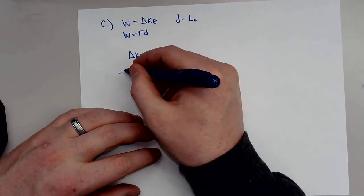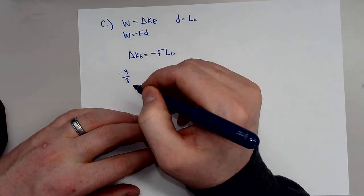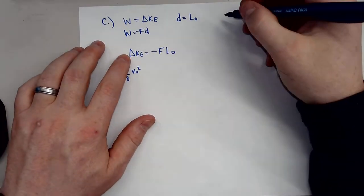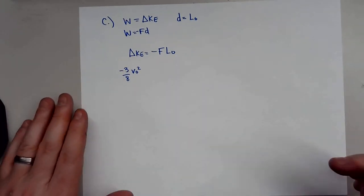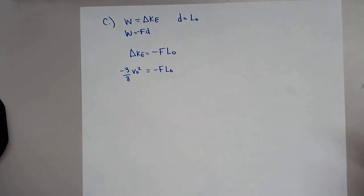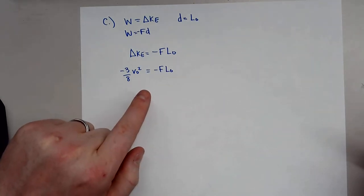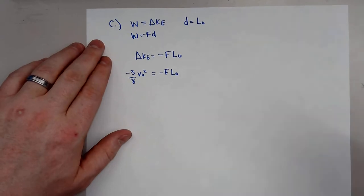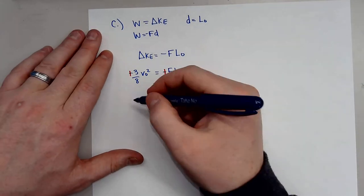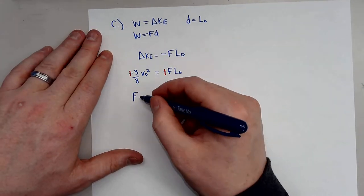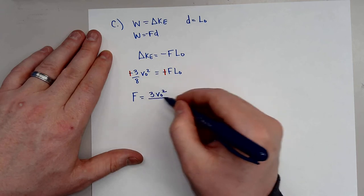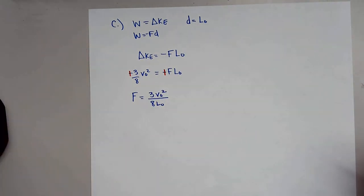We can rewrite this so that our change in kinetic energy equals negative force times L naught. We already know the change in kinetic energy — it's negative 3m·V naught squared over 8. So solving for F: the force that the material applies to the bullet as it travels through equals 3m·V naught squared divided by 8·L naught.